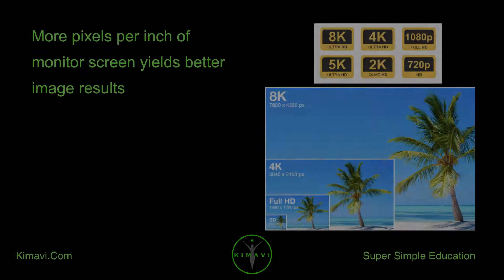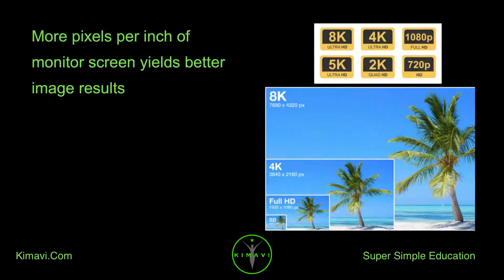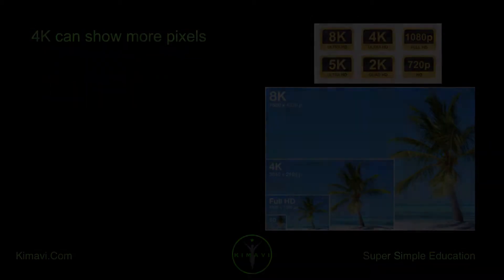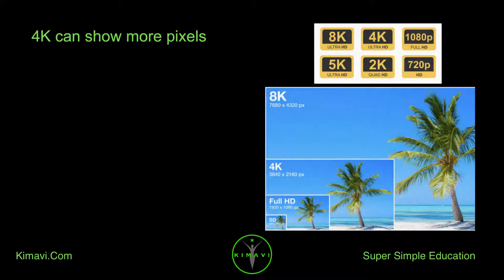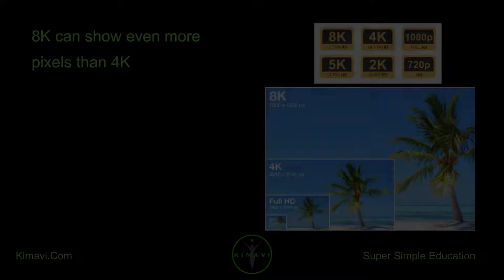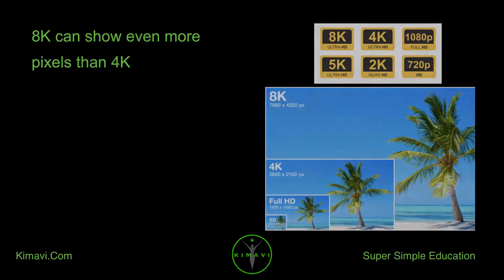More pixels per inch of monitor screen yields better image results. 4K can show more pixels, and 8K can show even more pixels than 4K.